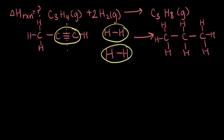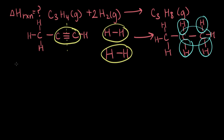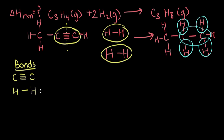Now let's look at the bonds that are formed. Since we broke the carbon-carbon triple bond, we made a new carbon-carbon single bond in the product molecule. Not only that, but these carbons are now attached to hydrogens, so we made four new carbon-hydrogen bonds. Summarizing the bonds broken: one carbon-carbon triple bond and two hydrogen-hydrogen bonds. And the bonds formed: one carbon-carbon single bond and four carbon-hydrogen bonds.